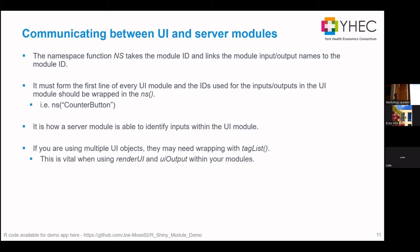That was a simple, standalone module looking at UI in isolation. So how do we get a UI module and a server module to communicate with each other? This is where the namespace function comes in. The namespace function effectively allows you to store input IDs in a hierarchical structure. The module ID combines with the namespace function, allowing you to store all the input names you use in a Shiny UI module within the ID for that particular module.